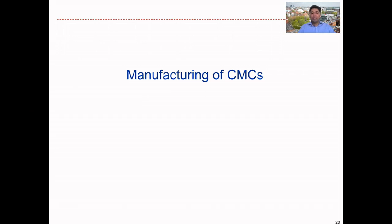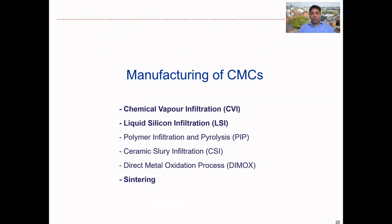We can make a start looking at manufacturing of ceramic matrix composites. There are quite a number of techniques. The ones I'm going to focus on in this unit are chemical vapor infiltration (CVI), liquid silicon infiltration (LSI), polymer infiltration and pyrolysis (PIP), ceramic slurry infiltration (CSI), direct metal oxidation process (DMOX), and finally sintering.